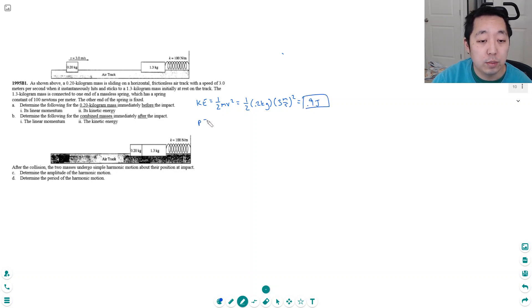Its momentum is just equal to mass times v, which is 0.2 kilograms times 3 meters per second. And so that's equal to 0.6 kilograms meters per second. The units are important. Don't forget to write that down.